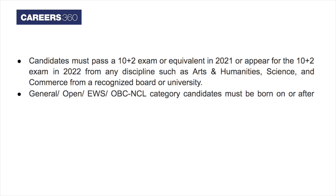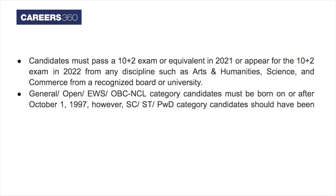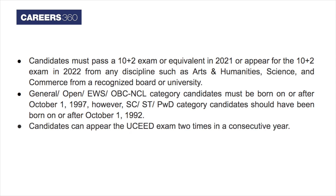General, Open, EWS, OBC NCL category candidates must be born on or after October 1, 1997. However, SC, ST, and PWD category candidates should have been born on or after October 1, 1992. Candidates can appear for the UCED exam two times in consecutive years.